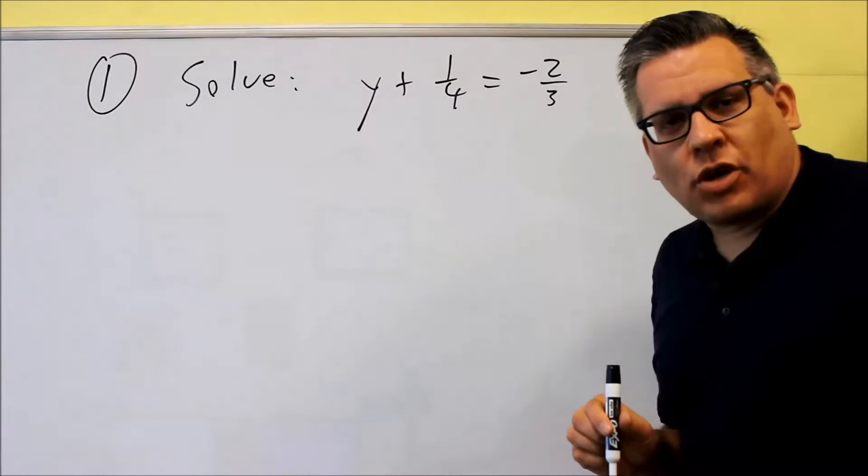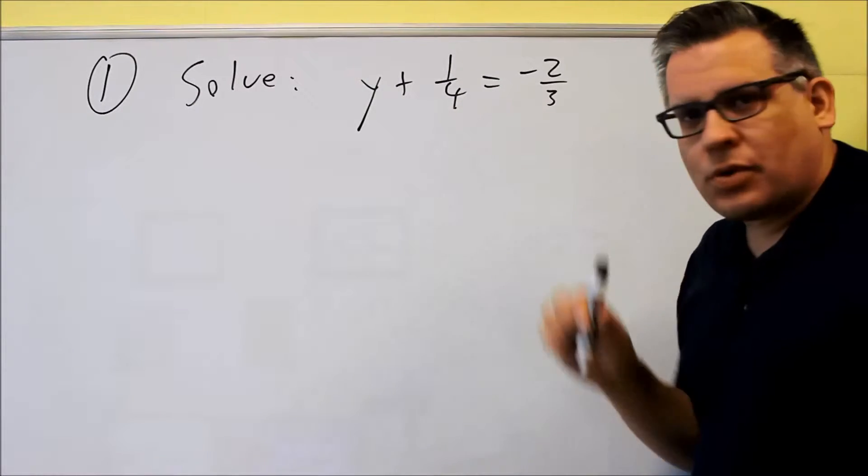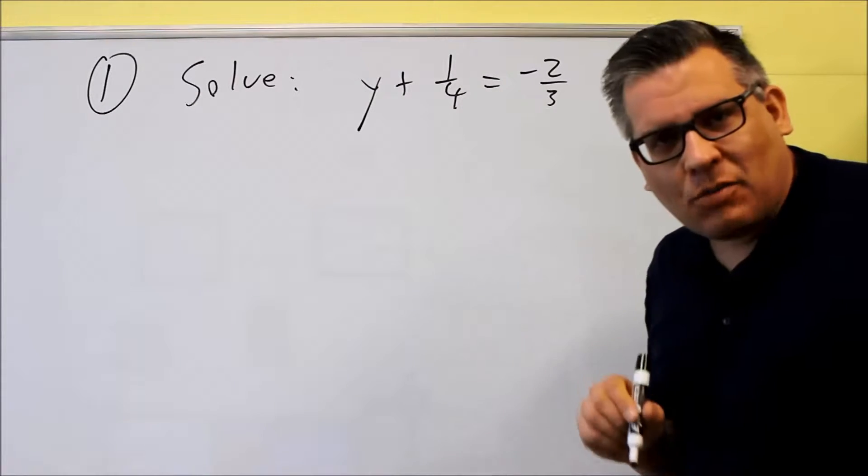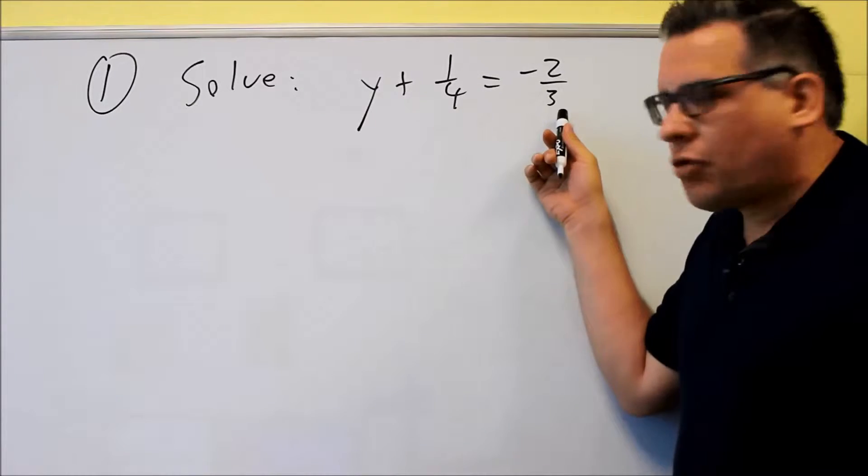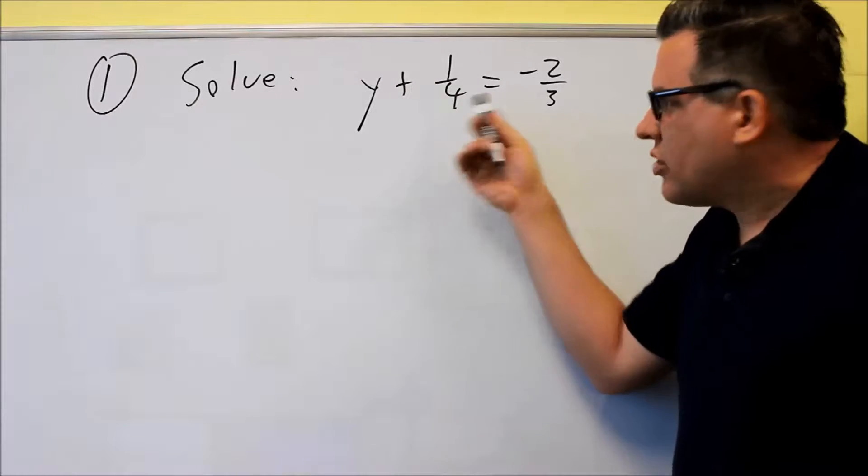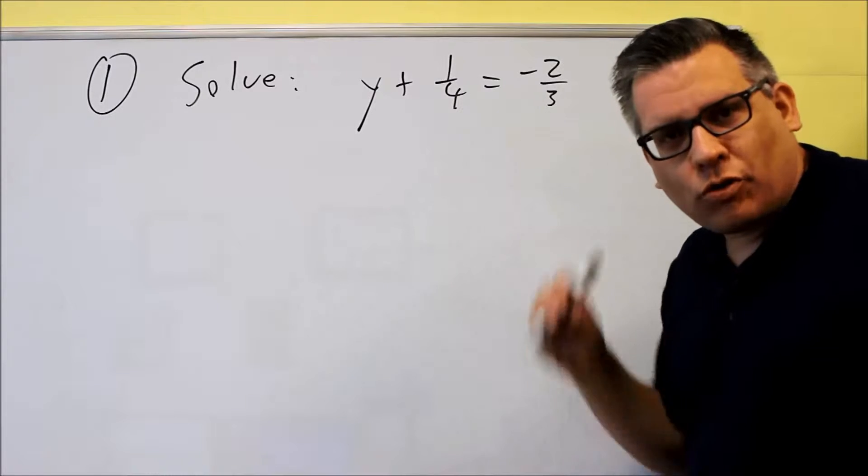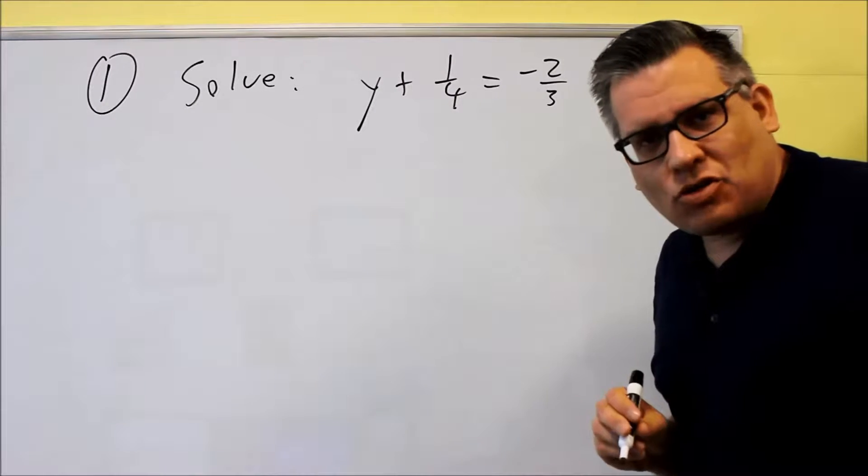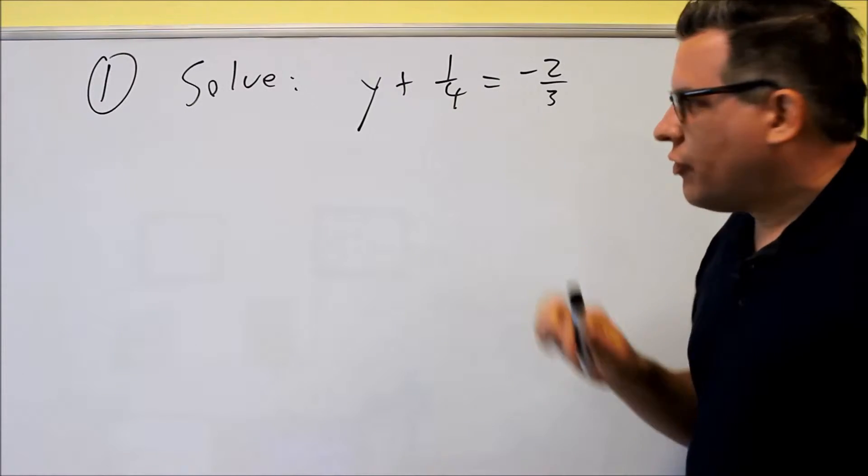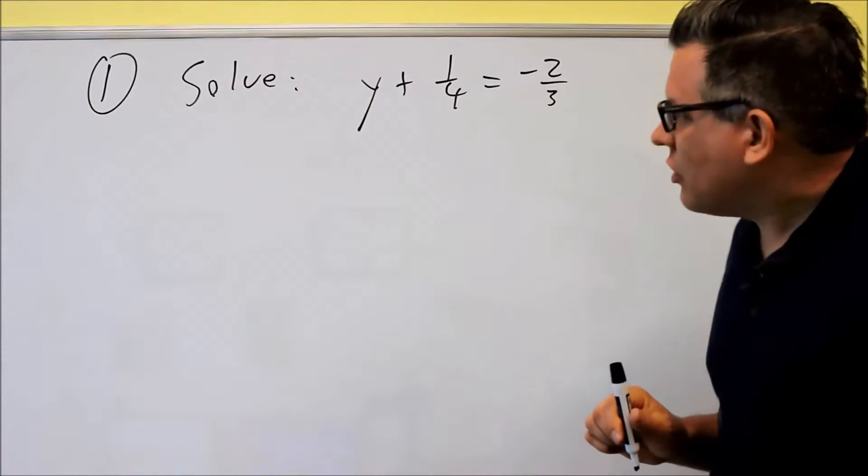What I'm going to do instead is show you a technique that works for working with fraction problems, and that's going to involve multiplying both sides by the common denominator. So I'm going to look at 4 and 3, and what's the smallest number that both 4 and 3 go into? That's going to be 12, so 12 is what I'm going to multiply both sides of the equation by.